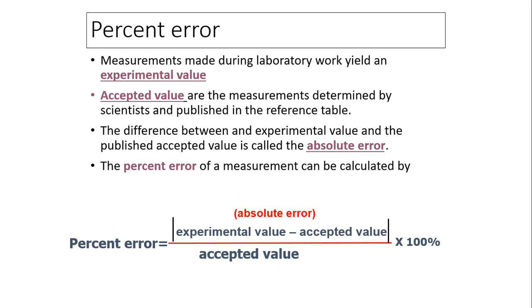Now here is a review for percent error. Since physics is experimental science, we conduct experiments. There are some vocabularies we need to know. The first one is experimental value - that is the value we get from our experiment. Accepted value is the value that other people, especially scientists, have published in the reference table. The difference between these two is called absolute error. The percent error is absolute error divided by accepted value times 100%.